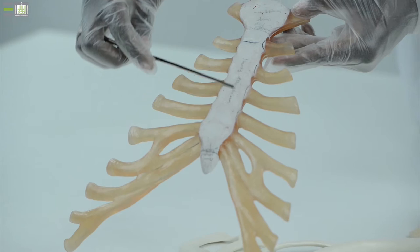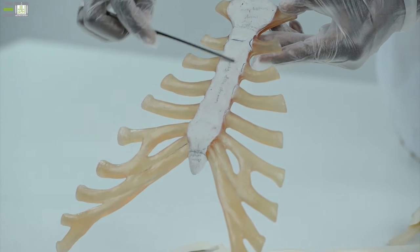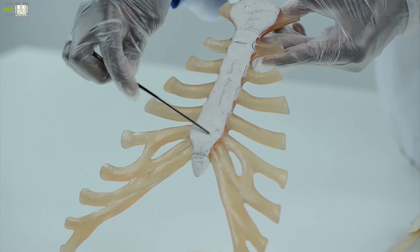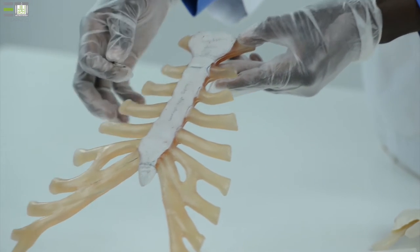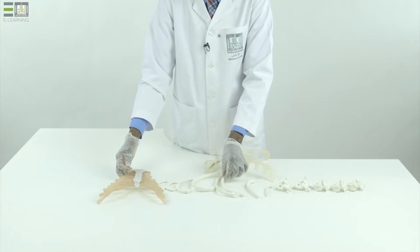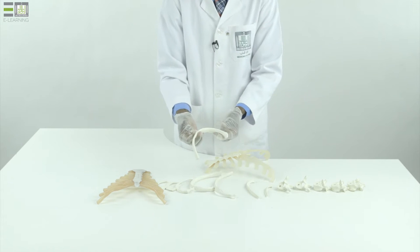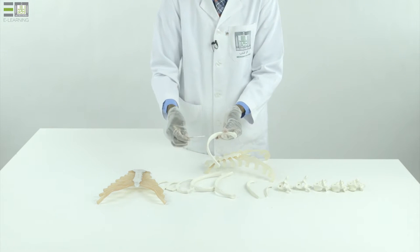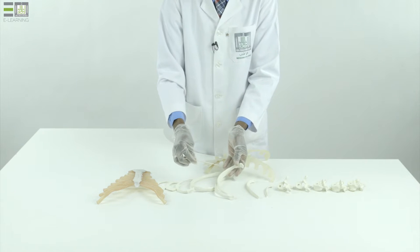Anteriorly, the sternum, which is flat bone, is located in the anterior part of our thorax. Anterolaterally, we have 12 pairs of ribs with their costal cartilage anteriorly.